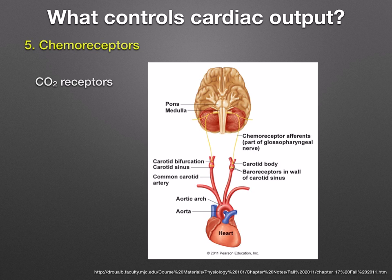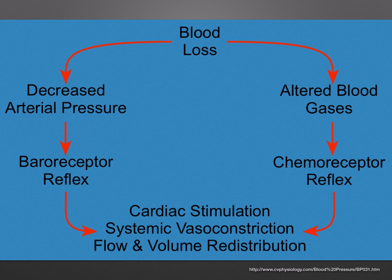Chemoreceptors are receptors sensitive to carbon dioxide concentration. They are found in the brain and the walls of the carotid arteries and aorta. When the carbon dioxide concentration increases, they cause an increase in cardiac output. Here's a diagram showing how blood loss results in a decrease in arterial pressure and alteration in blood gases, stimulating the chemoreceptor and baroreceptor reflexes, which increase cardiac output.